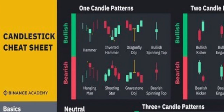Now the names of single candle patterns. Looking at one candle at a time: you have the hammer in the middle, inverted hammer, dragonfly doji, and bullish spinning top. Then you have the exact opposites for the bearish side — hanging man, which is opposite of the hammer; shooting star, opposite of inverted hammer; gravestone doji, opposite of dragonfly; and bearish spinning top, opposite of bullish spinning top.